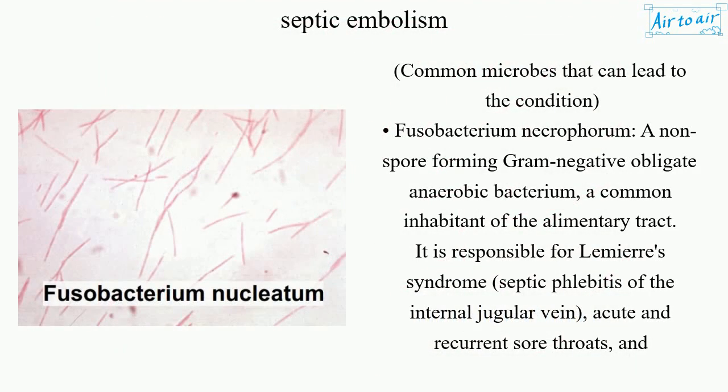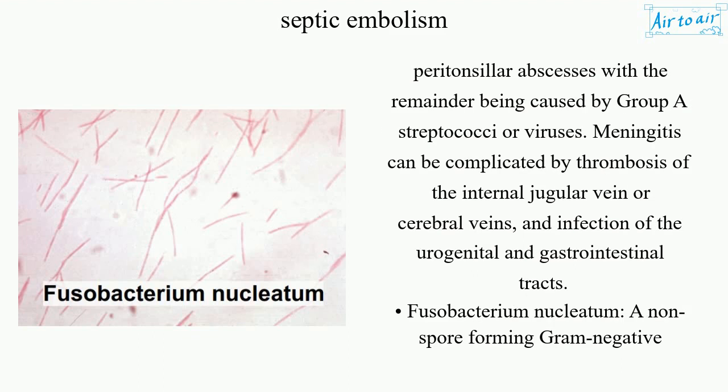Common microbes that can lead to the condition include Fusobacterium necroforum, a non-spore forming gram-negative obligate anaerobic bacterium and a common inhabitant of the alimentary tract. It is responsible for Lemierre's syndrome — septic phlebitis of the internal jugular vein — acute or recurrent sore throats, and peritonsillar abscesses, with the remainder being caused by group A streptococci or viruses.